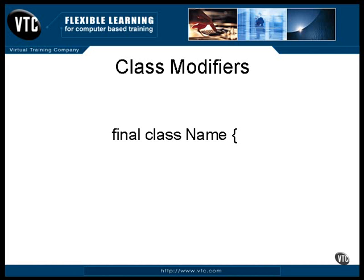The strictfp modifier makes all operations using float or double inside the class follow the strict FP rules. Without this specification, there is some leeway that the compiler can use for speeding things up by taking some liberties with the way intermediate values are calculated and used. If you want more information on this, check with the IEEE 754.